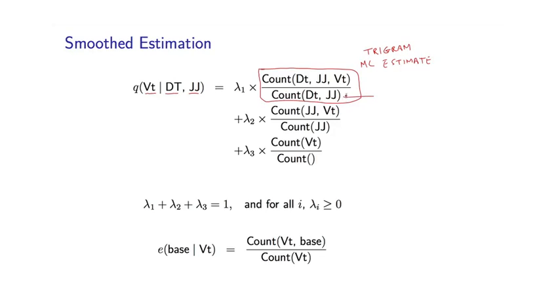And notice on the denominator, I have the number of times I've seen dt followed by jj, that's what we're conditioning on here. And on the numerator, I have the number of times I've seen this sequence of three tags. So this is the trigram count, this is the bigram count, and I've taken the ratio of these two terms.